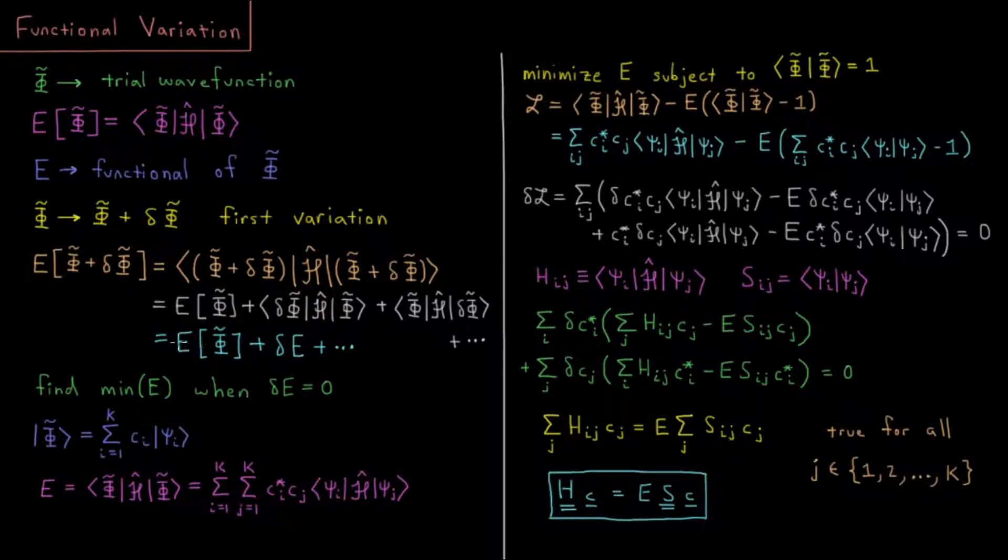That gives us our zero-order term, which is the energy of the original wave function, plus a first-order term, which is these two terms, plus higher-order terms that we're not going to concern ourselves with, second-order and beyond.